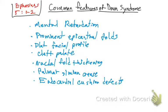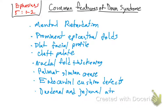They have duodenal and jejunal atresia. What is the mineral that we absorb in the duodenum? Iron. Good job. So with duodenal and jejunal atresia — and in the jejunum we absorb almost everything, about 90% of things — they're going to have absorption problems. They can get, for example, anemia and iron deficiency, and lack of other nutrients because of jejunal atresia.